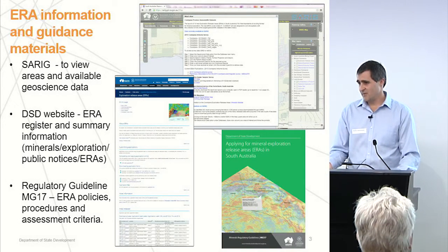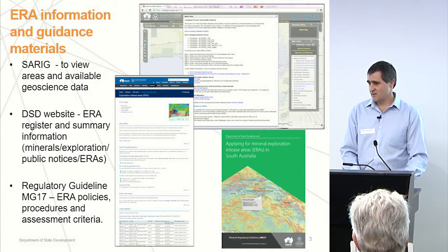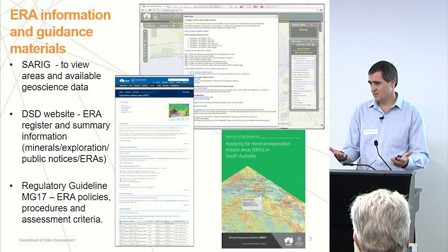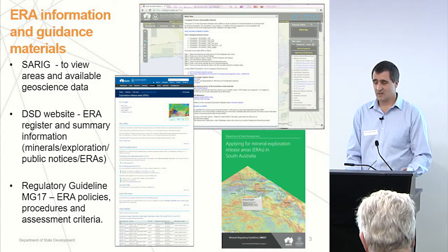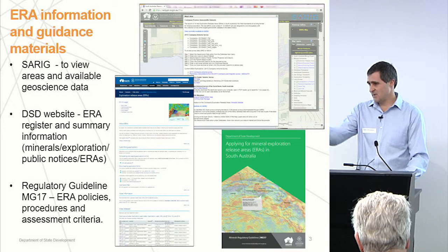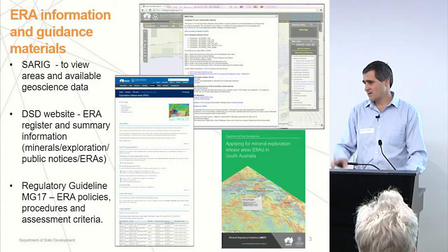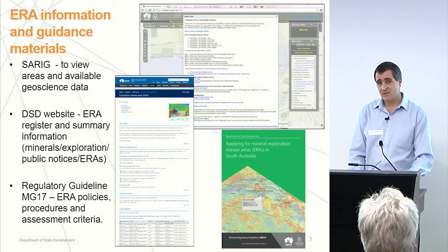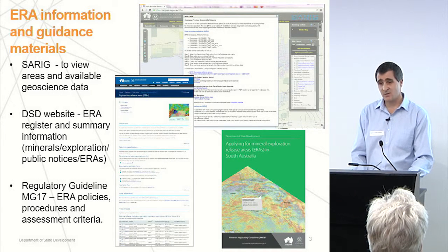In terms of finding out information about the ERA areas, there are a number of ways you can do that. We've got our SARIG information portal, which is the figure at the top there, where you can look at where the ERAs are located and download some information about what we know about the area already. In the centre of that SARIG page, you can see a big box with a list of information. If you click on 'What's New' at the top of the SARIG page, that'll come up — it's a list of all the information available for Kumpana and how to obtain it.